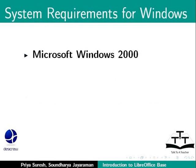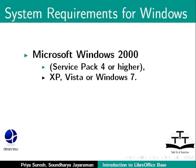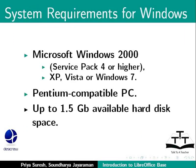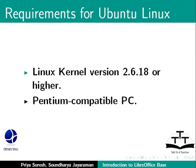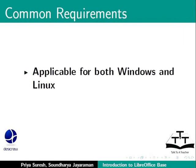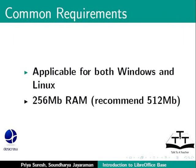Let us look at the prerequisites for using Base. For Microsoft Windows, the system requirements are: Windows 2000 Service Pack 4 or higher, XP, Vista, or Windows 7; a Pentium compatible PC; and up to 1.5 GB available hard disk space. For Ubuntu Linux, you need Linux Kernel Version 2.6.18 or higher and a Pentium compatible PC. For both Windows and Linux, 256 MB RAM is required, with 512 MB recommended.